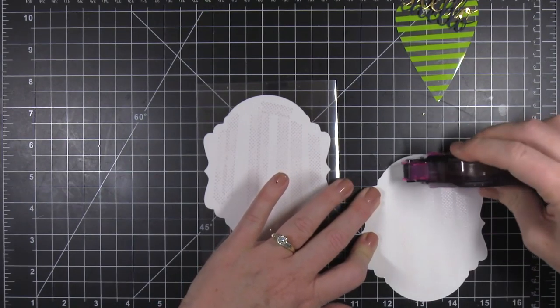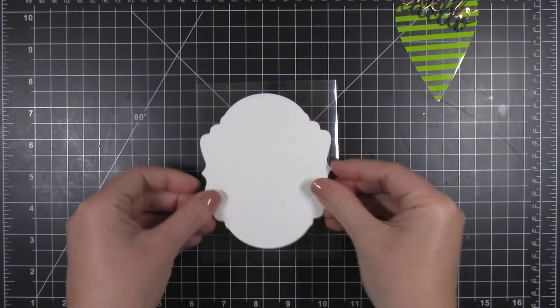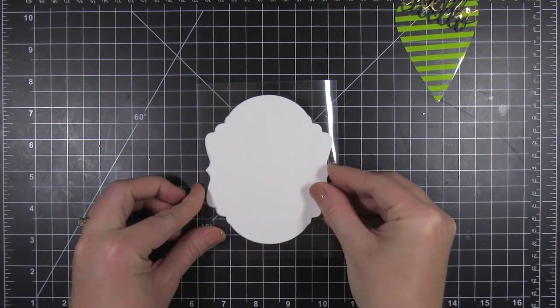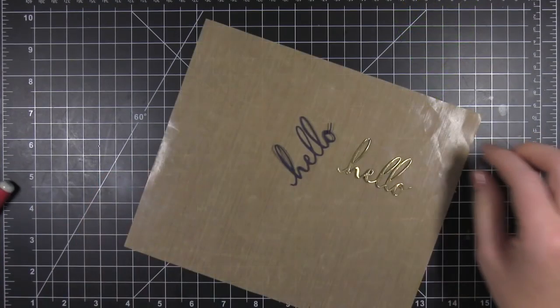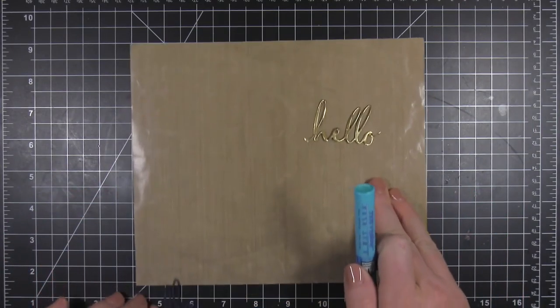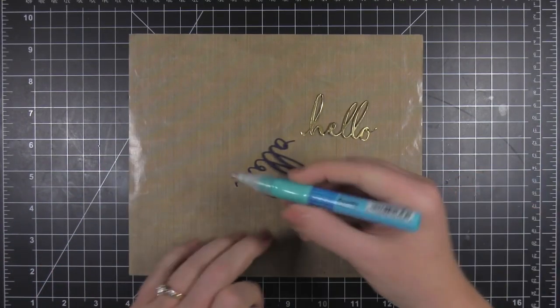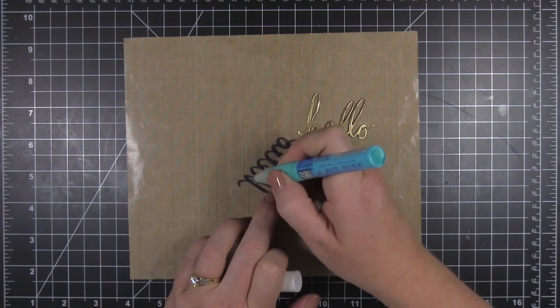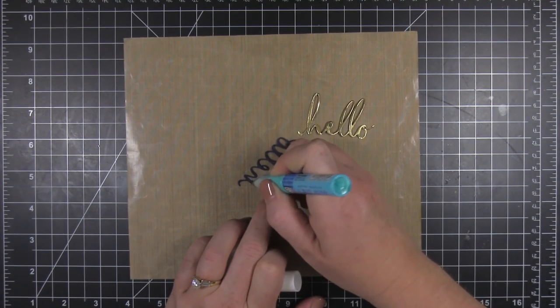And once again, because I want to cover up all that adhesive, I'm going to add adhesive to a second piece cut out of some Neenah Solar White card stock and add that to the back of the card. So once again, I've sandwiched that acetate between those two pieces. And that also adds a place where you can write a greeting or a note inside the card as well. So that's kind of cool for that as well.